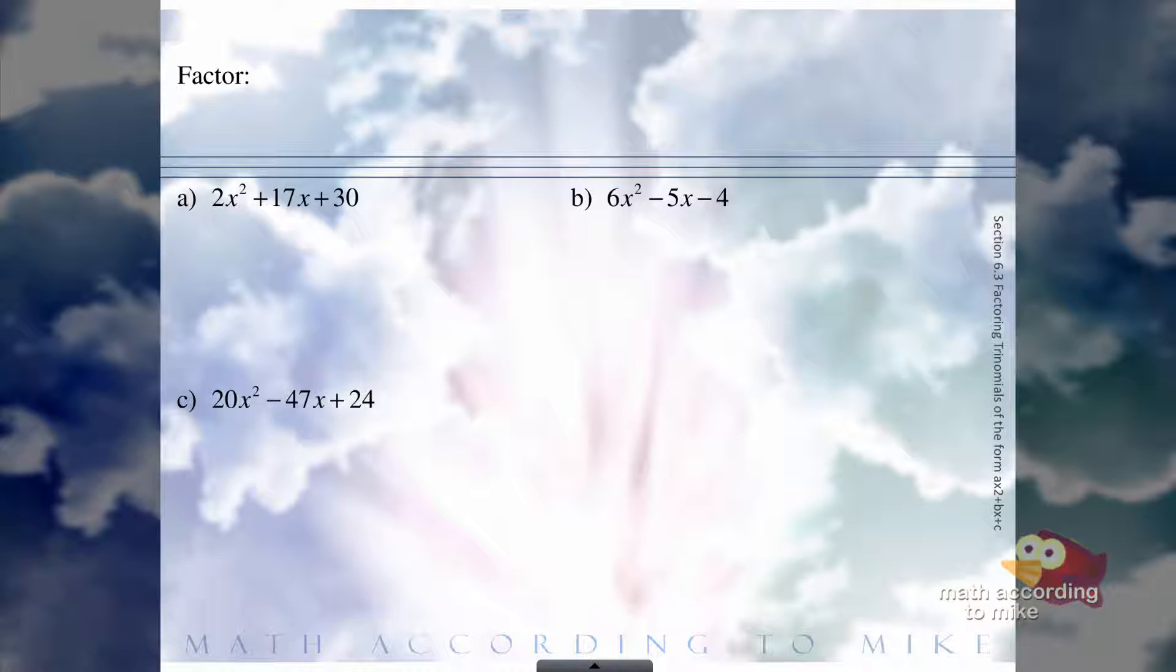So in part a here, off to the side we have a to be 2, c to be 30, so a times c is 60. And now we need to find the factors of 60 that add up to 17.